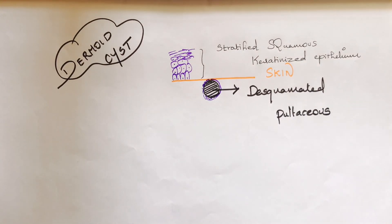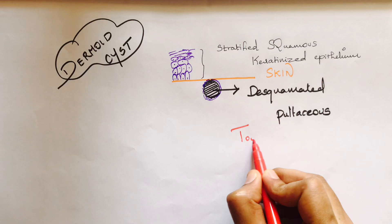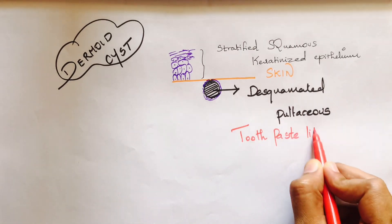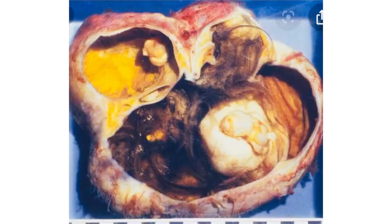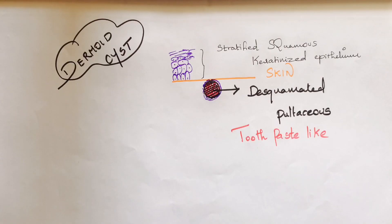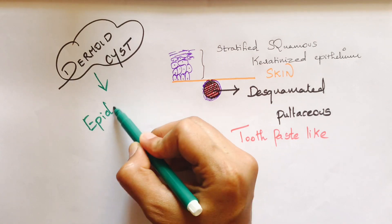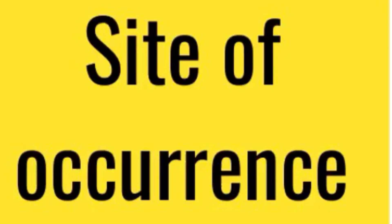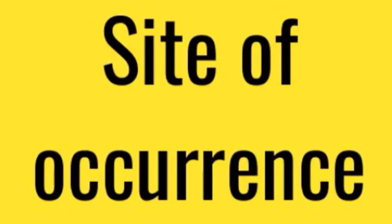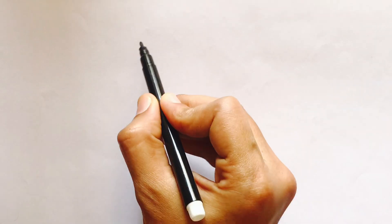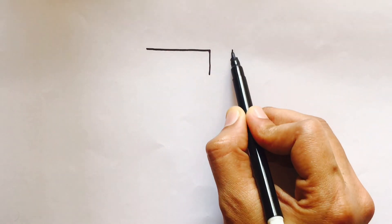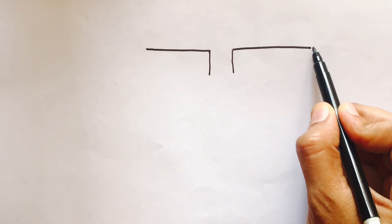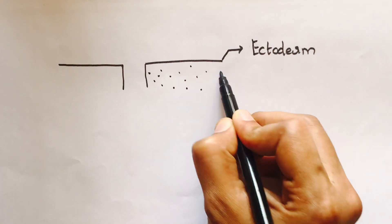It has a pultaceous or toothpaste-like material and can also be called an epidermal cyst. Dermoid cysts usually occur at the line of embryonic fusion.